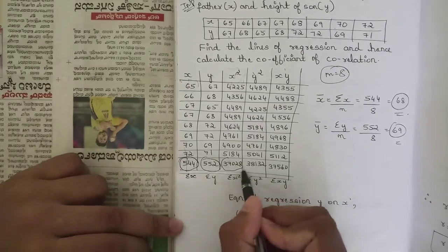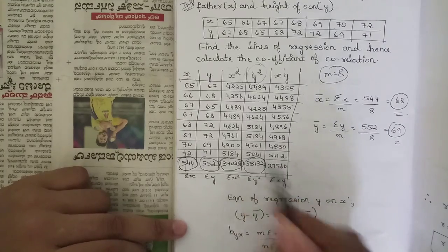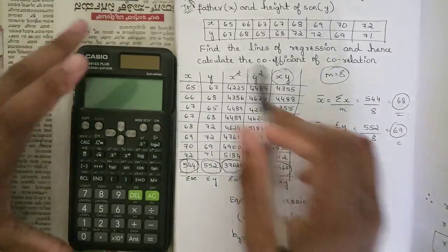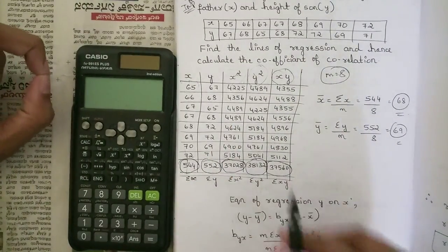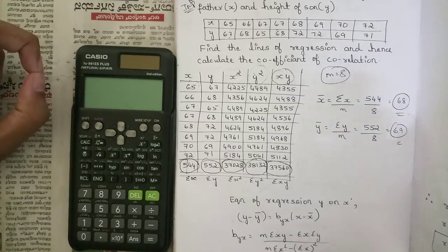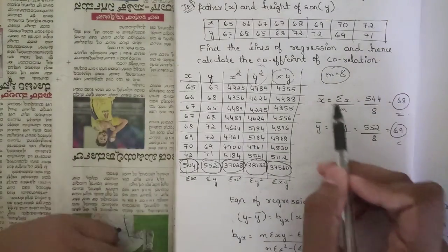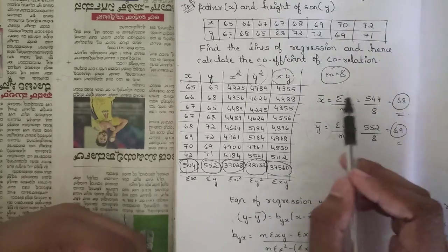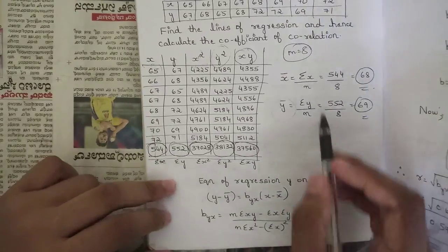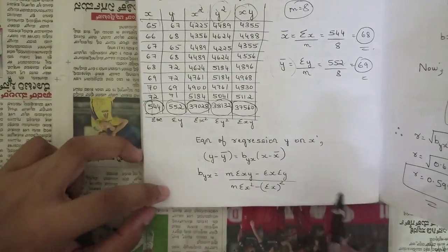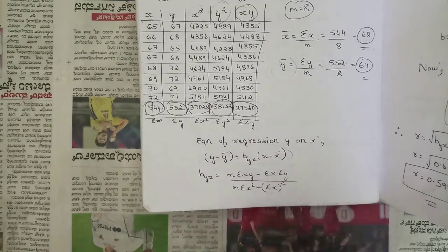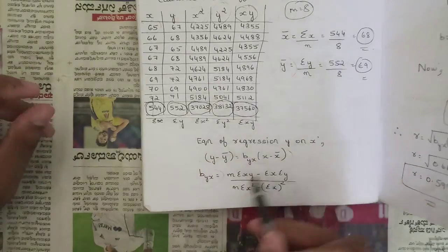Summation x² = 37028, summation y² = 38132, summation xy = 37560. Calculate x̄ = 544/8 = 68 and ȳ = 552/8 = 69. Now calculate both regression lines: y on x is given by y − ȳ = byx(x − x̄), and x on y is given by x − x̄ = bxy(y − ȳ).